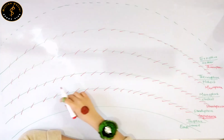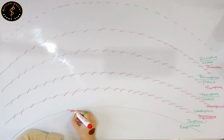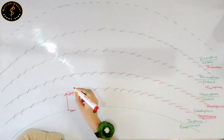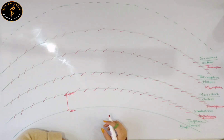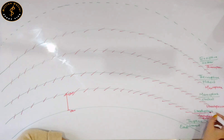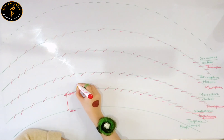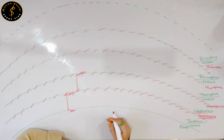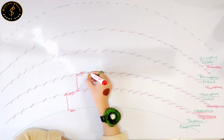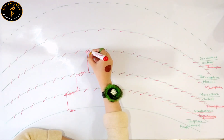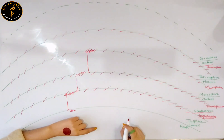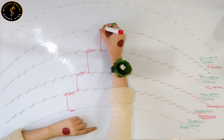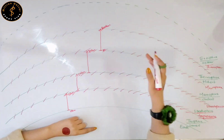Your troposphere starts from zero kilometers from the surface of planet Earth and goes up to 12 kilometers. Your stratosphere starts from 12 kilometers and goes up to 50 kilometers above the surface of your planet Earth. Your mesosphere starts from 50 kilometers and goes up to 80 kilometers. Your thermosphere starts from 80 kilometers and goes up to 800 kilometers.